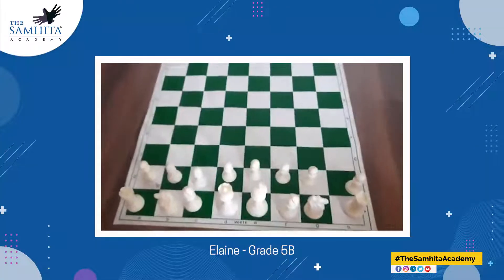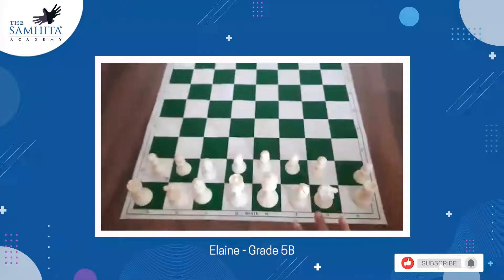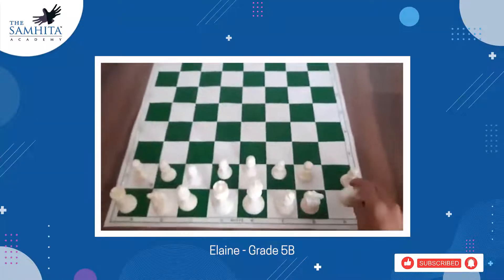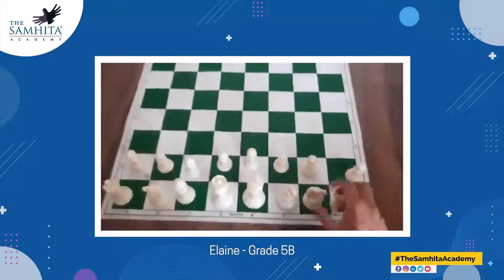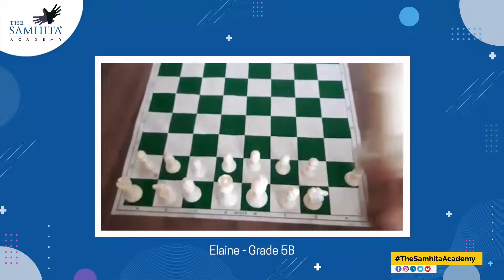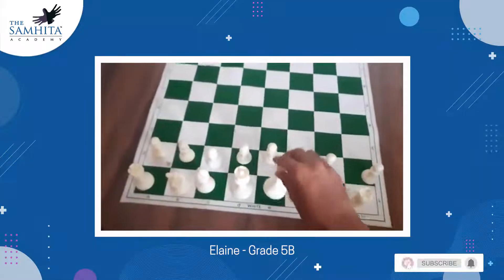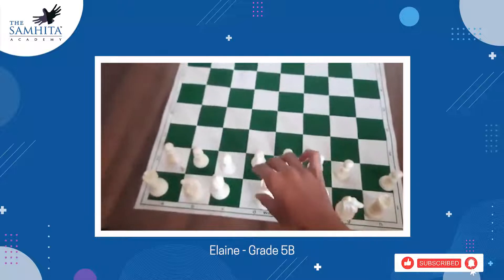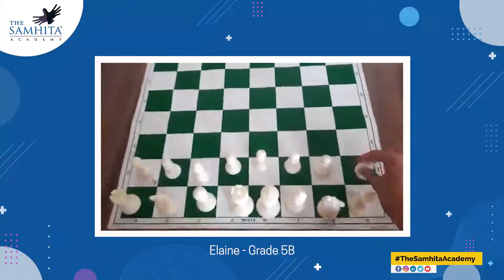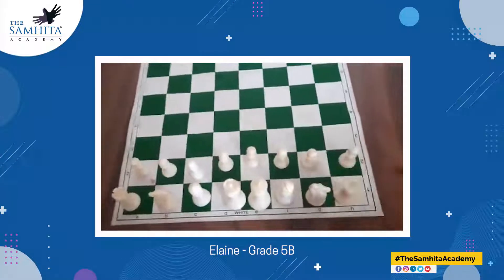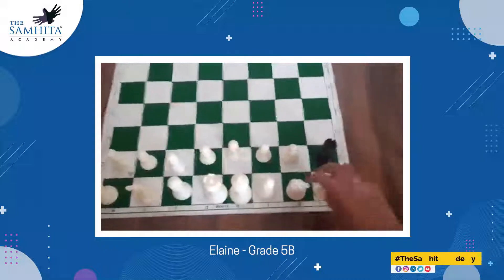When we capture, exchange, or sacrifice a piece, we look at the point values and calculate how much we gain. For example: a rook is worth 5 points, a knight 3, a bishop 3, a queen 9, a pawn 1, and a king 0.